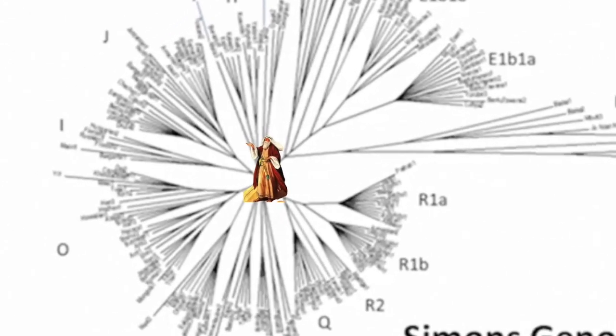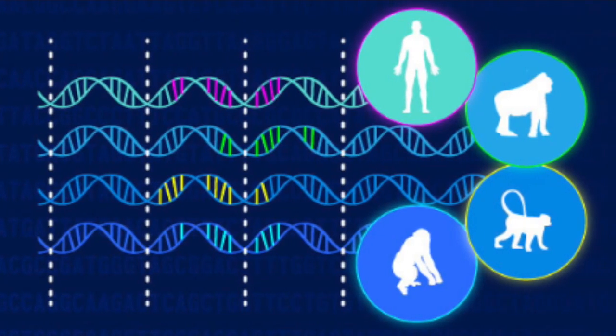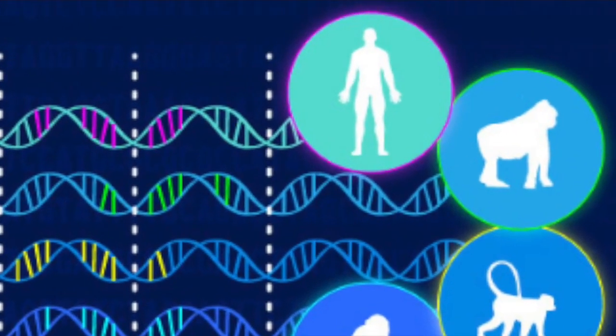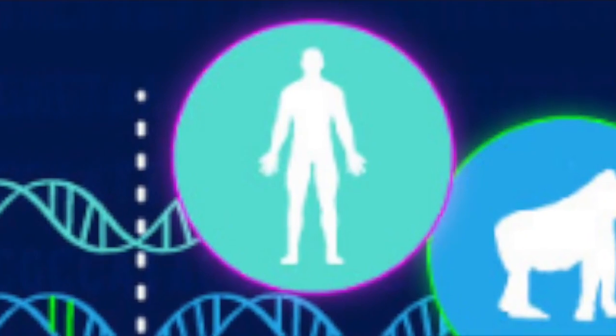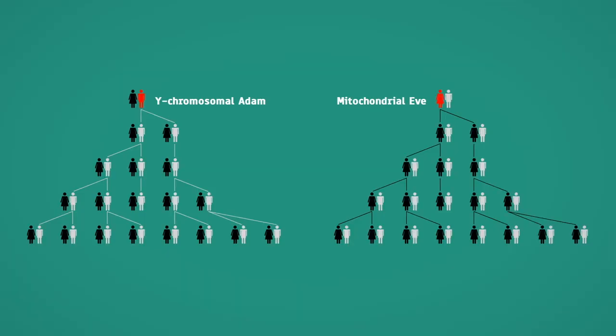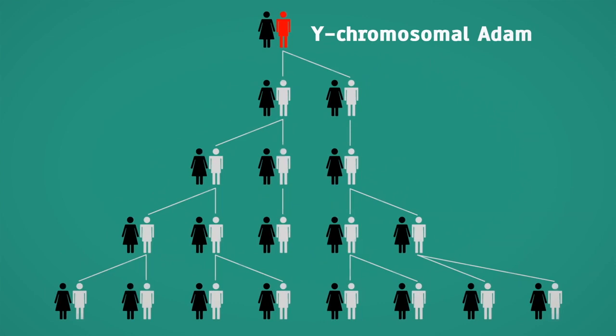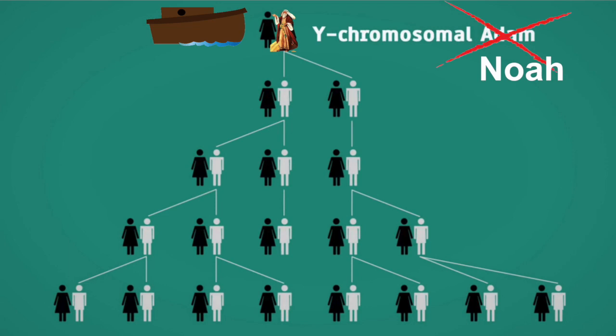This single person is not a chimpanzee. It is a man, and this man lived a few thousand years ago. Who is this? Evolutionists have coined our last Y-chromosomal ancestor Y-chromosome Adam, but in fact, it is Y-chromosome Noah.